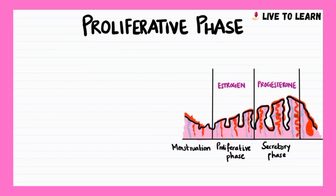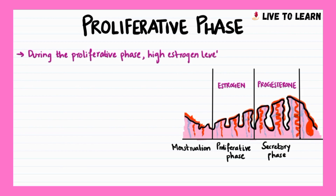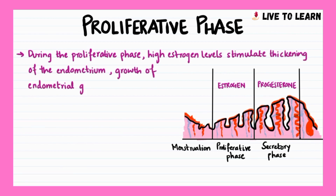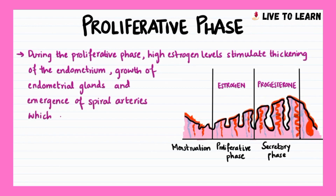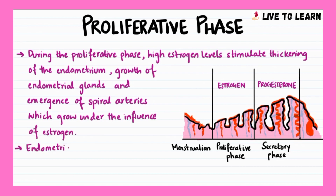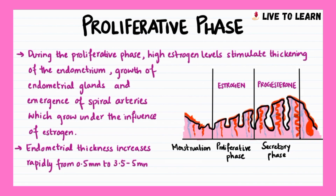While the ovary prepares an egg for ovulation in the follicular phase, the uterus prepares the endometrium for implantation in the proliferative phase. During the proliferative phase, high estrogen levels stimulate the thickening of the endometrium, the growth of the endometrial glands, and the emergence of spiral arteries which grow under the influence of estrogen. The endometrial thickness increases rapidly from 0.5mm to 3.5–5mm by the end of the proliferative phase.